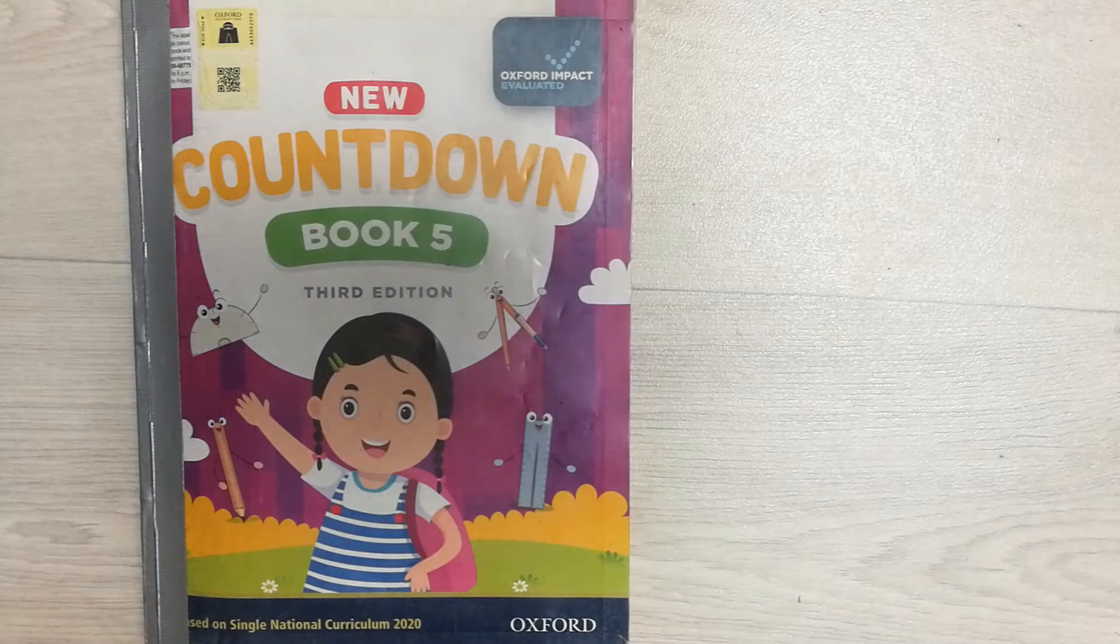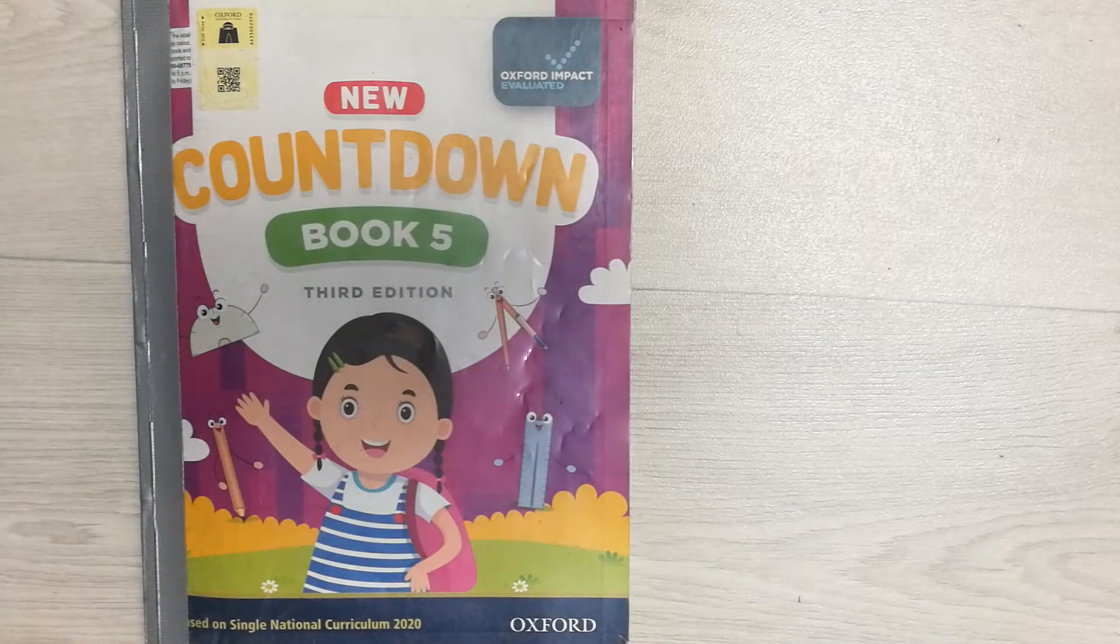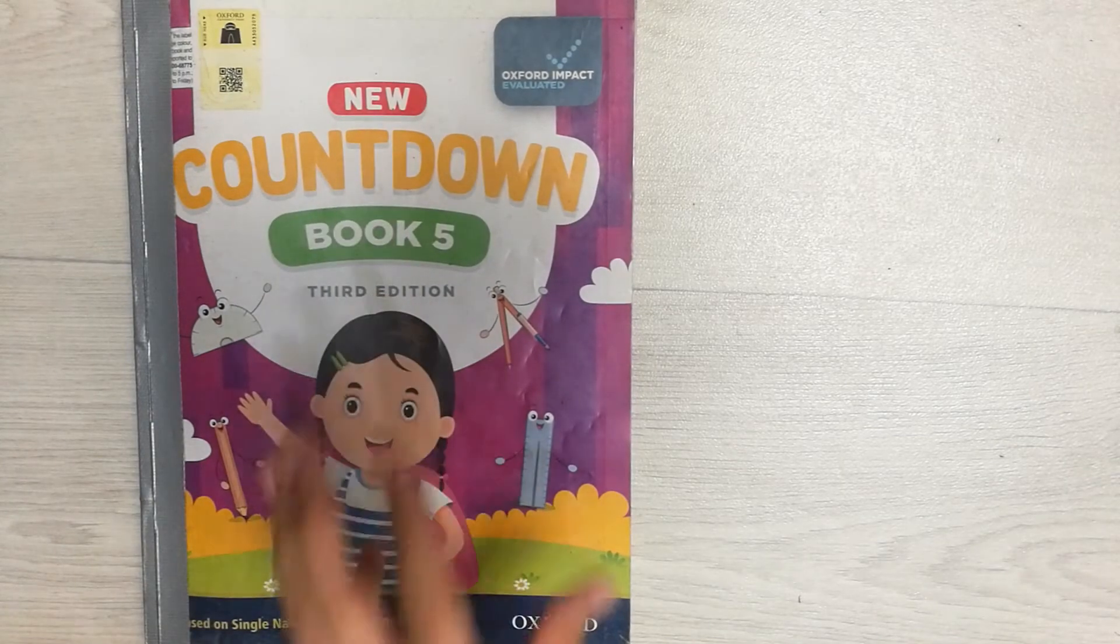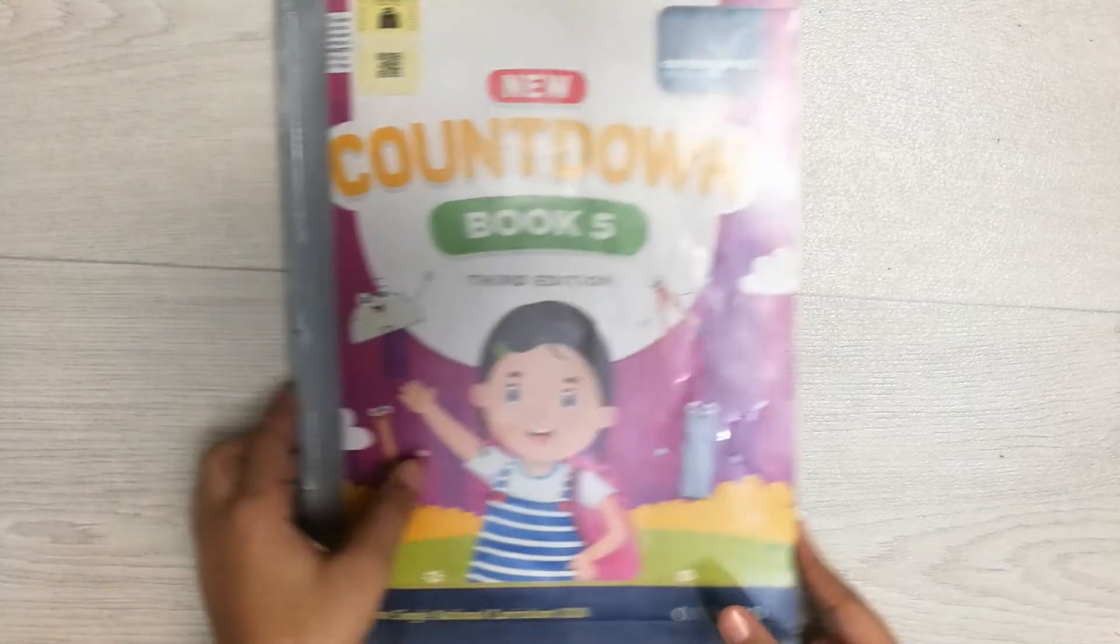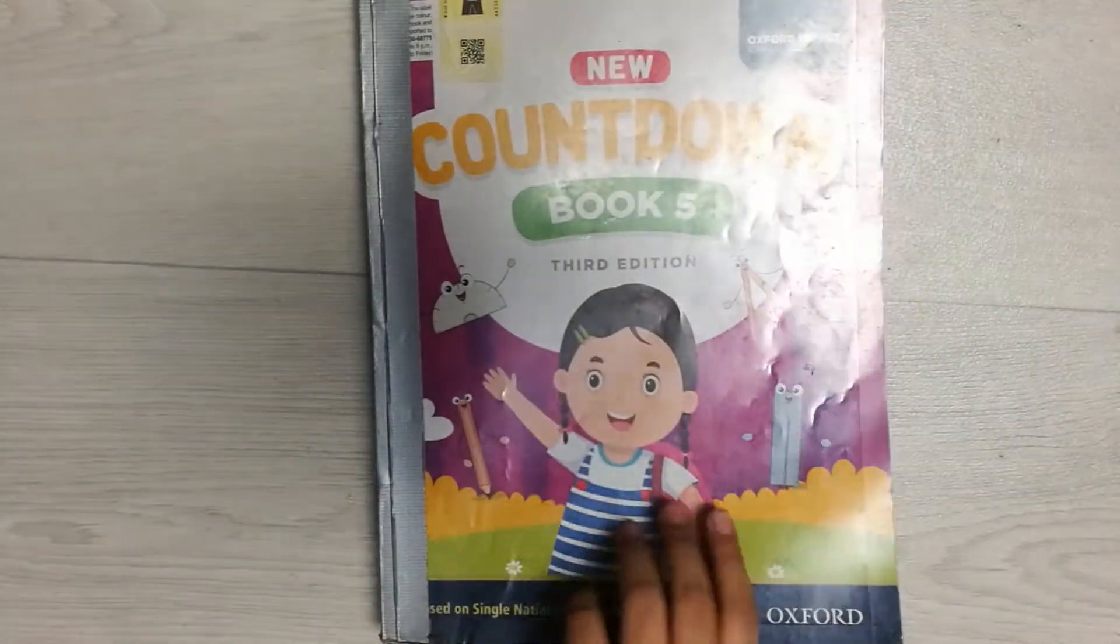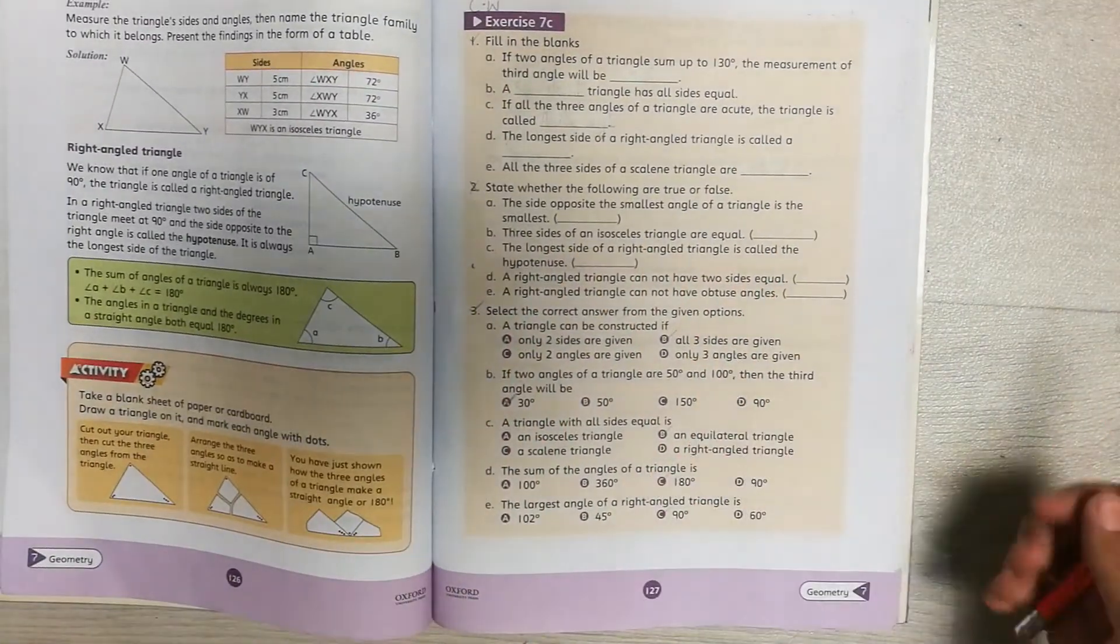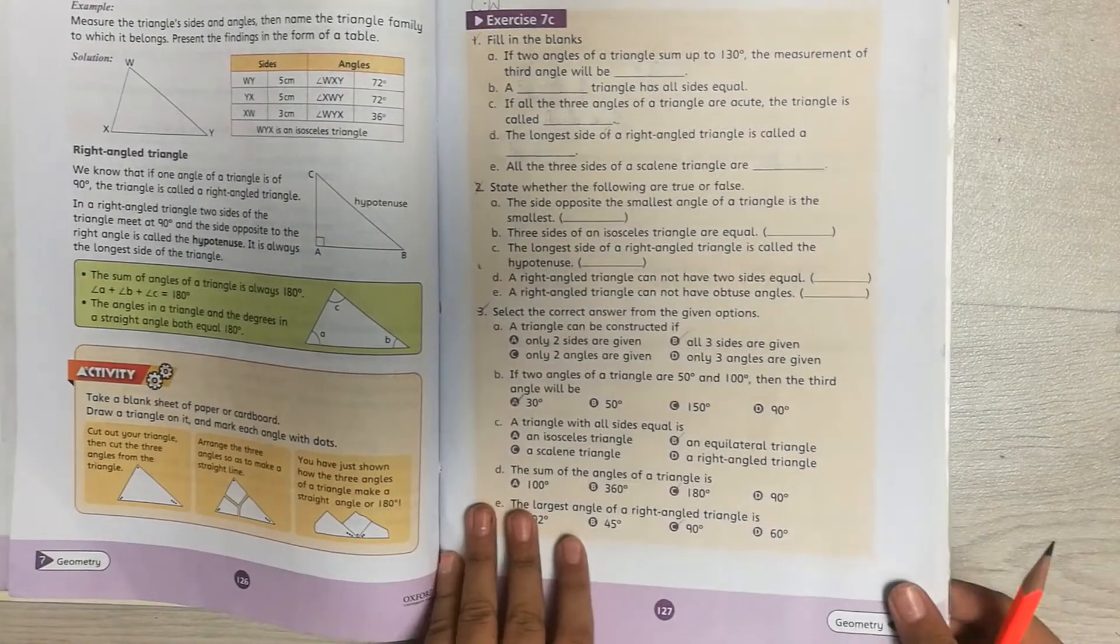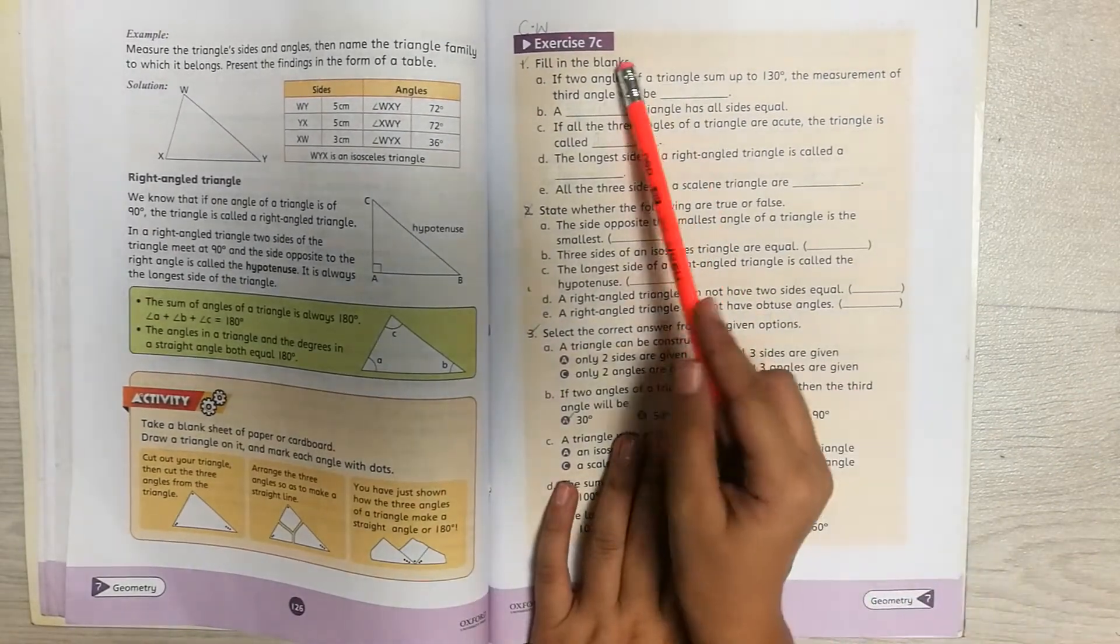Hello students, I hope you're doing great. In this video we are going to work on Oxford Countdown Book 5, Third Edition. Now let's get started, let me show you the page. The page that we are doing in this video is 127, chapter is Geometry, and the exercise that we are doing is 7C.